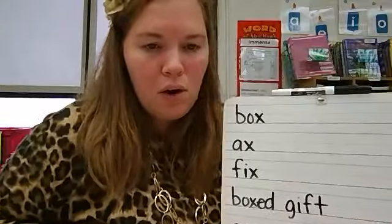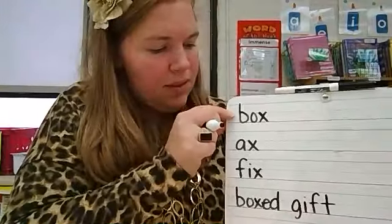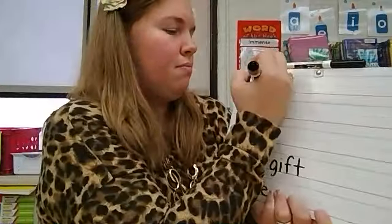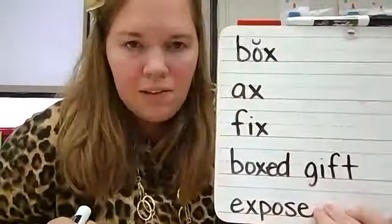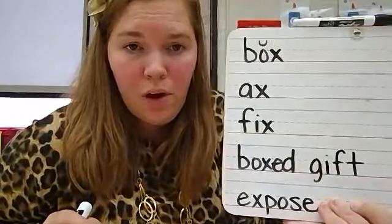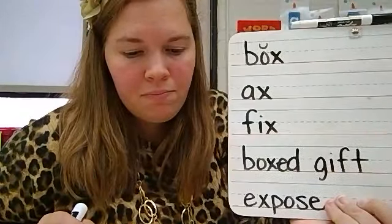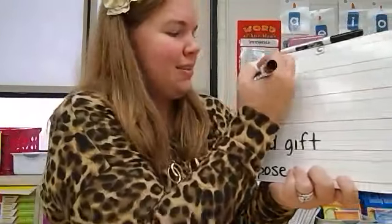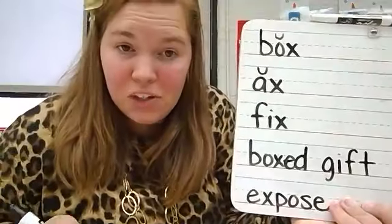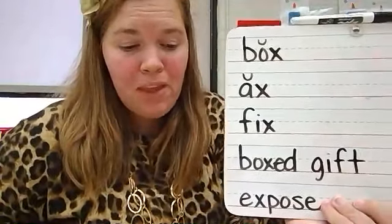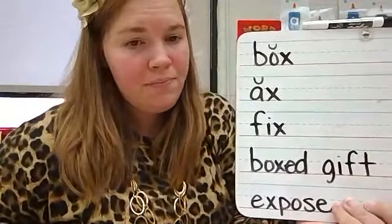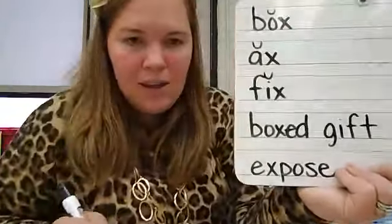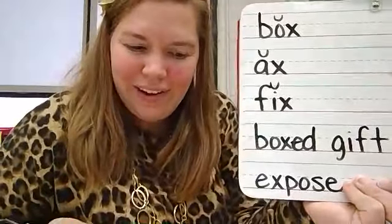So we are going to code the words. This is box. Breve above the O because it makes the short sound. Box. Axe — breve above the A, short A sound. What about fix? Fix — breve above the I. It makes the short I sound. Very good.